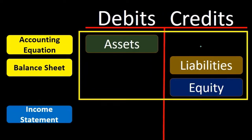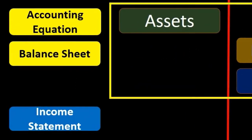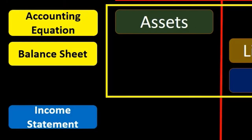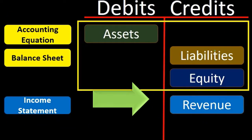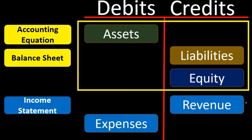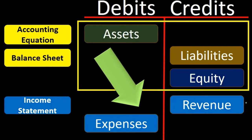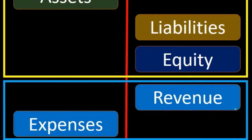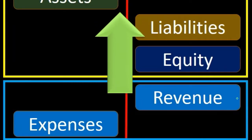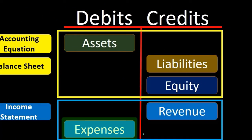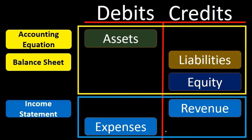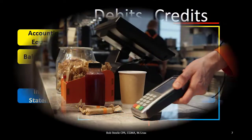The income statement throws a little twist into our accounting equation. The income statement includes revenue, which has a normal credit balance, and expenses, which have a normal debit balance. Note that revenue and expenses only go one way — clients only pay us, so revenue only increases, and we only pay expenses like the utility bill or wages. The utility company doesn't pay us and employees don't pay us — transactions only go one way.